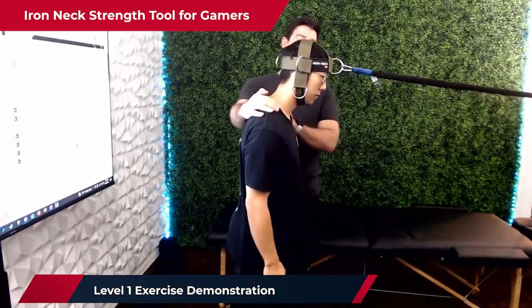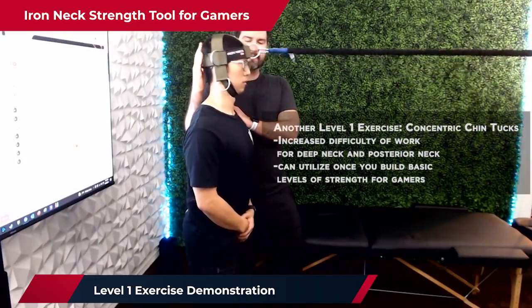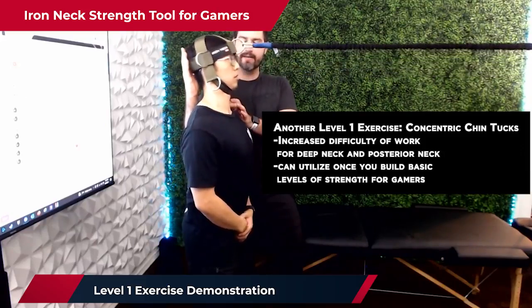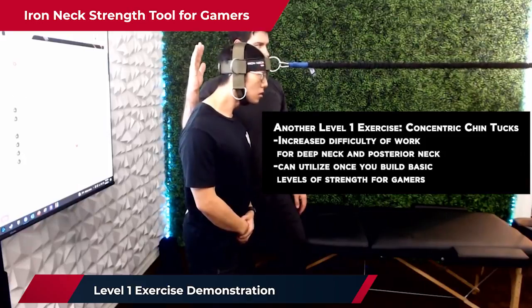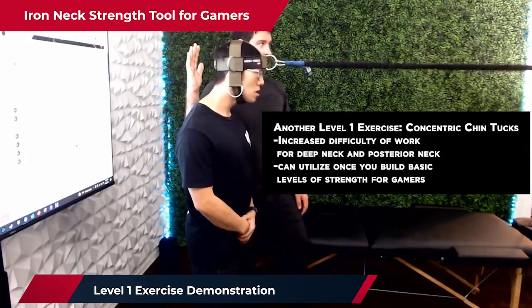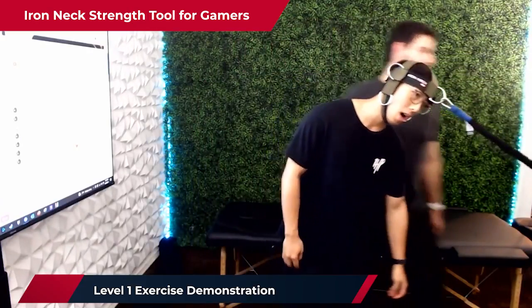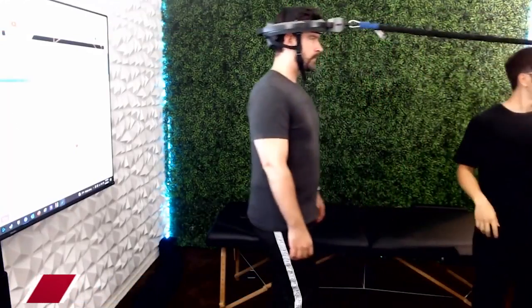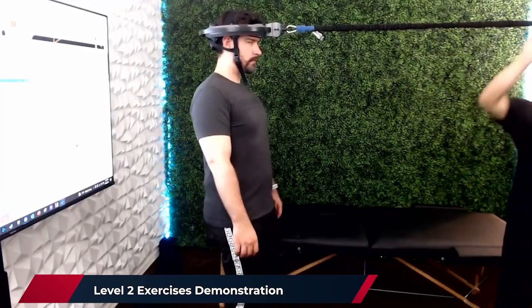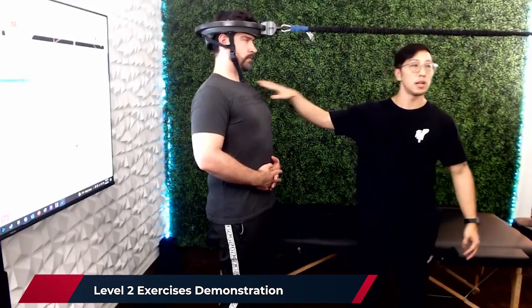Now we're going to do concentric level two here — head forward and back. You're doing the same type of chin tucks as before, looking for the SCM muscles not to be overactive. Nine and ten. Maintaining the chin tuck, maintaining the use of the deep neck muscles here, and then rotating — and this adds this next level of control for the neck.